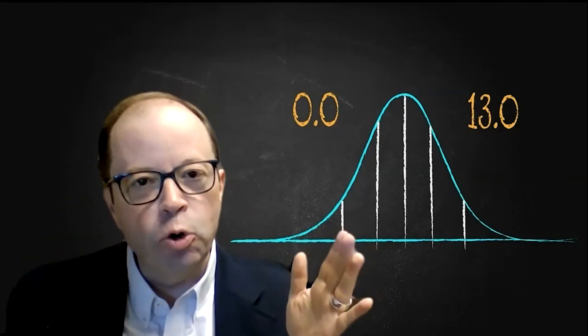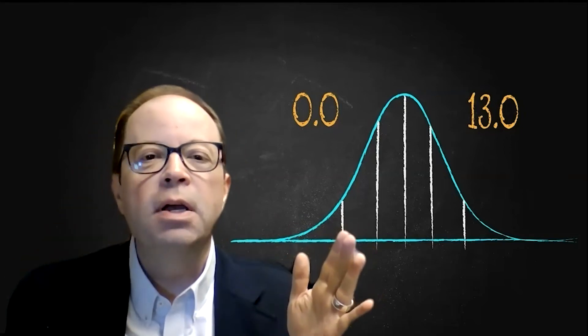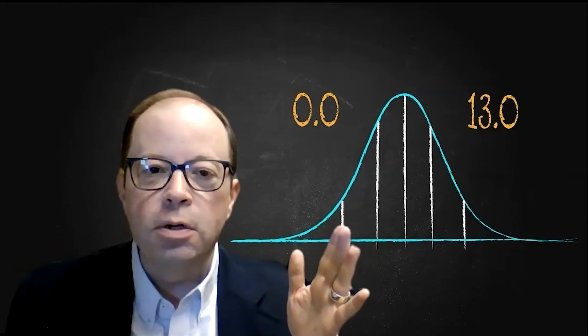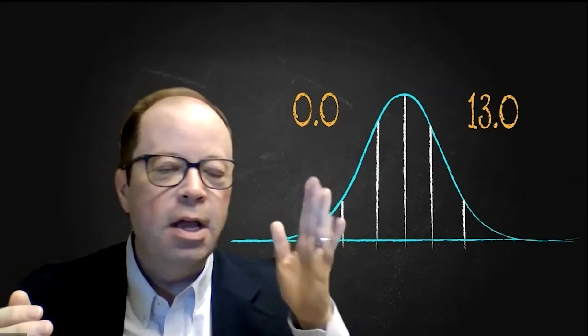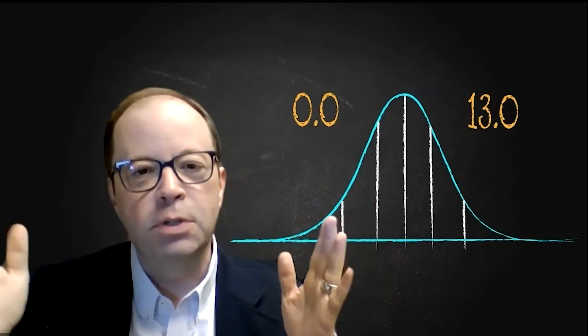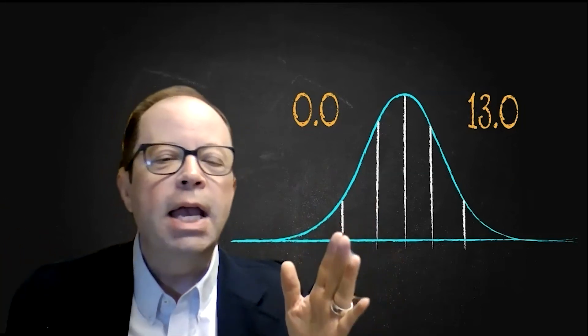They are merely a reference to performance, and they are norm-referenced scores, which is why I have the shape of the normal curve distribution in the background. It's a distribution of scores—it lets you know where the student is on a scale ranging from 0.0 up to 13.0.